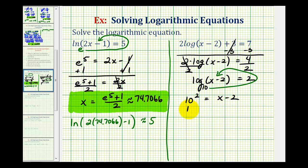10 squared is 100. Add two to both sides of the equation. We have 102 equals x, or we can write x equals 102.